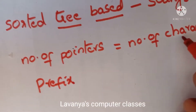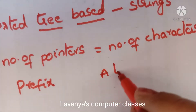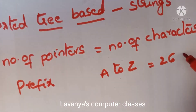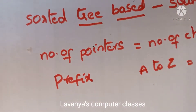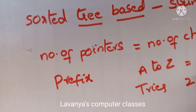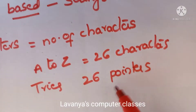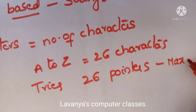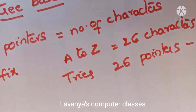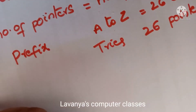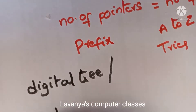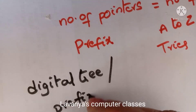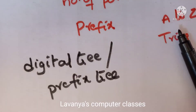The number of pointers is equal to the number of characters — A to Z, that is 26 characters. So a trie has a maximum of 26 pointers. It is also called a digital tree or prefix tree.